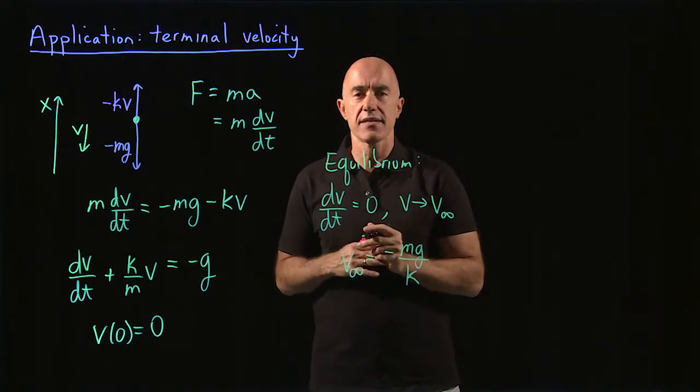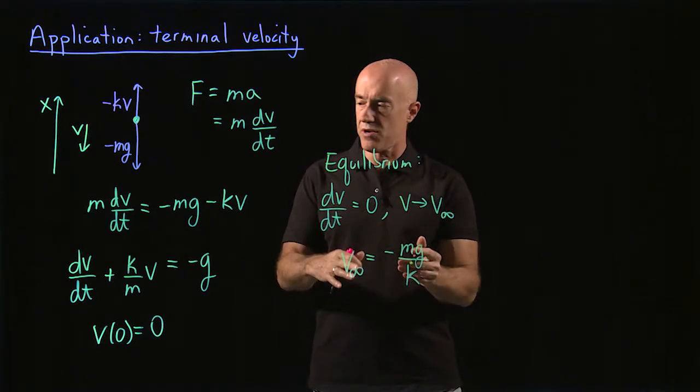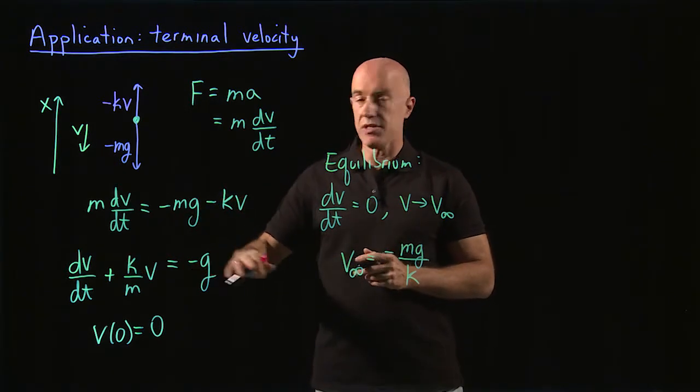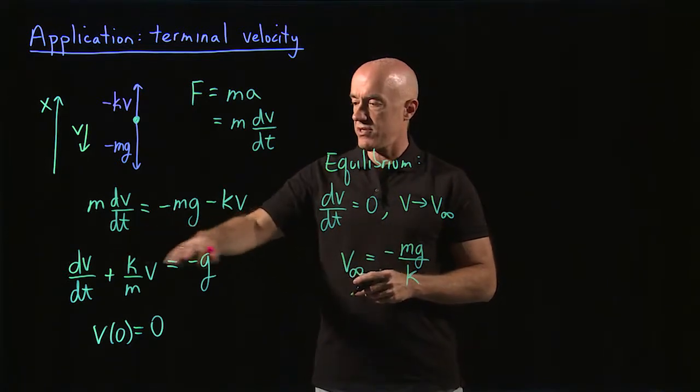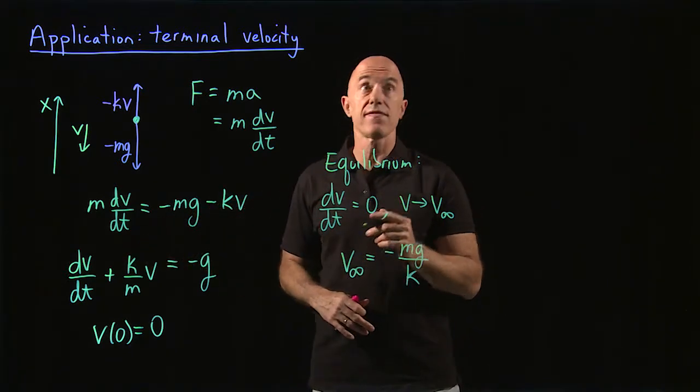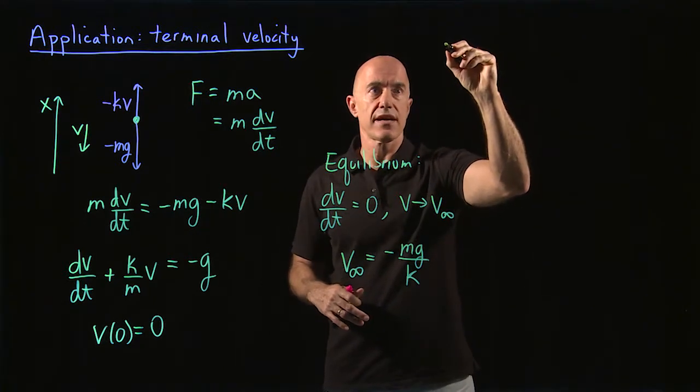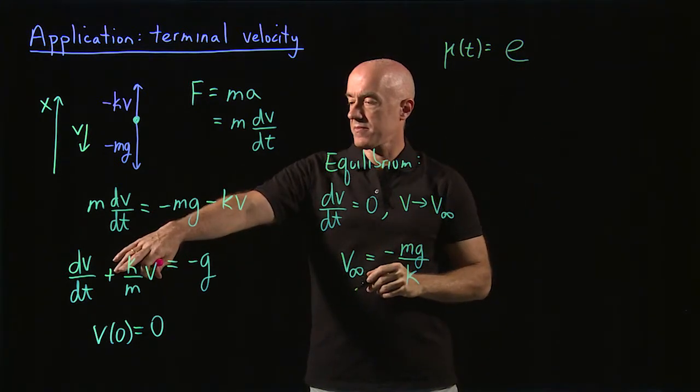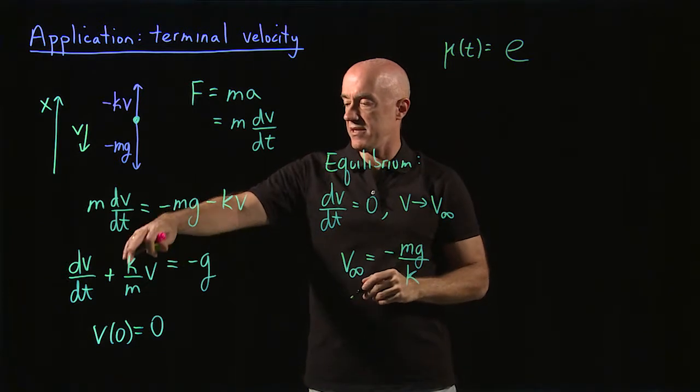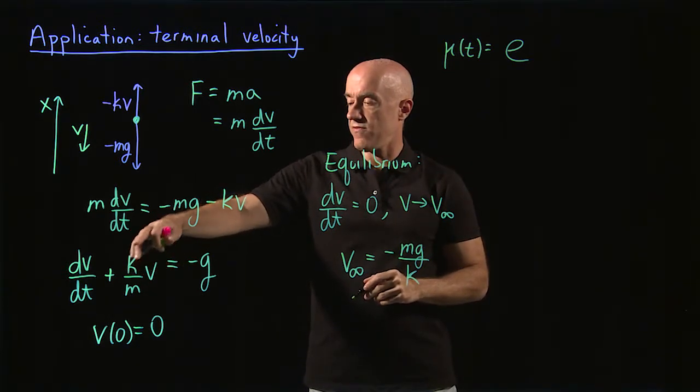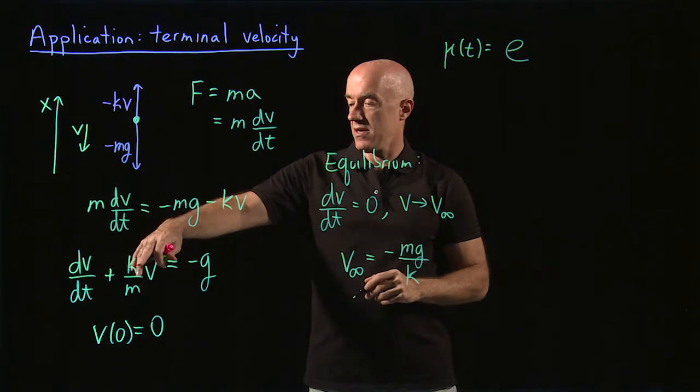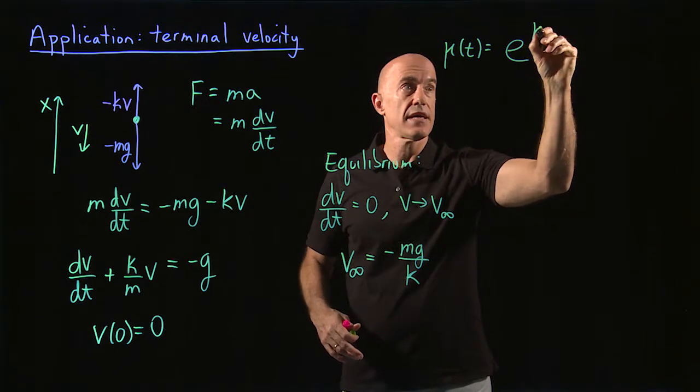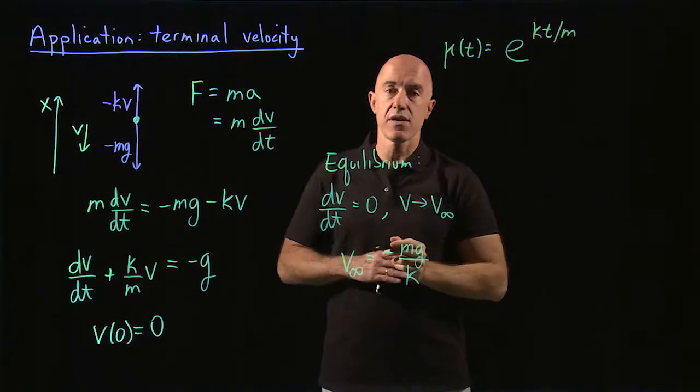We can go further than this. We can ask how the skydiver approaches terminal velocity. To do that, we need to solve this differential equation. It's a linear first order equation. So we can solve this using an integrating factor. So we can take our integrating factor mu of t is equal to e to the integral of p of t dt. So it's the integral of k over m dt, which is just kt over m.